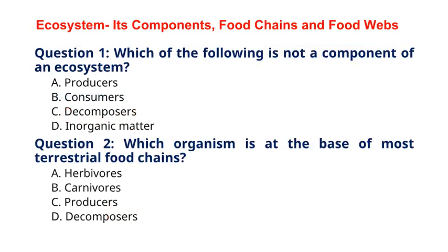Question 1. Which of the following is not a component of an ecosystem? A. Producers. B. Consumers. C. Decomposers. D. Inorganic matter. The correct answer to question 1 is option D, Inorganic matter. Explanation: Inorganic matter is not considered a component of an ecosystem, as it consists of non-living materials like rocks and minerals.